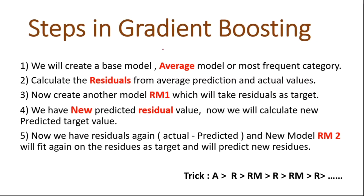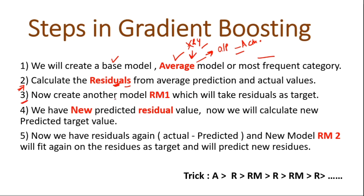These are the steps we follow in gradient boosting. Step 1: create a base model — an average model. We pass all data X and Y to this average model. In classification it would be the most frequent category; in regression we calculate the average. Step 2: calculate the residuals by subtracting predicted from actual to get the error.